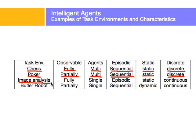Image analysis — for example detecting faces or cats in an image — is fully observable since you can see the whole image. It's single-agent because only one intelligent agent is analyzing the image. It's episodic because you don't care about the sequence of images that led to this one snapshot — just that one image matters. It's static because when the agent is analyzing the image nothing changes in the colors. It is continuous, though, because pixels can have an infinite number of colors — any real-number RGB value — making the environment continuous.